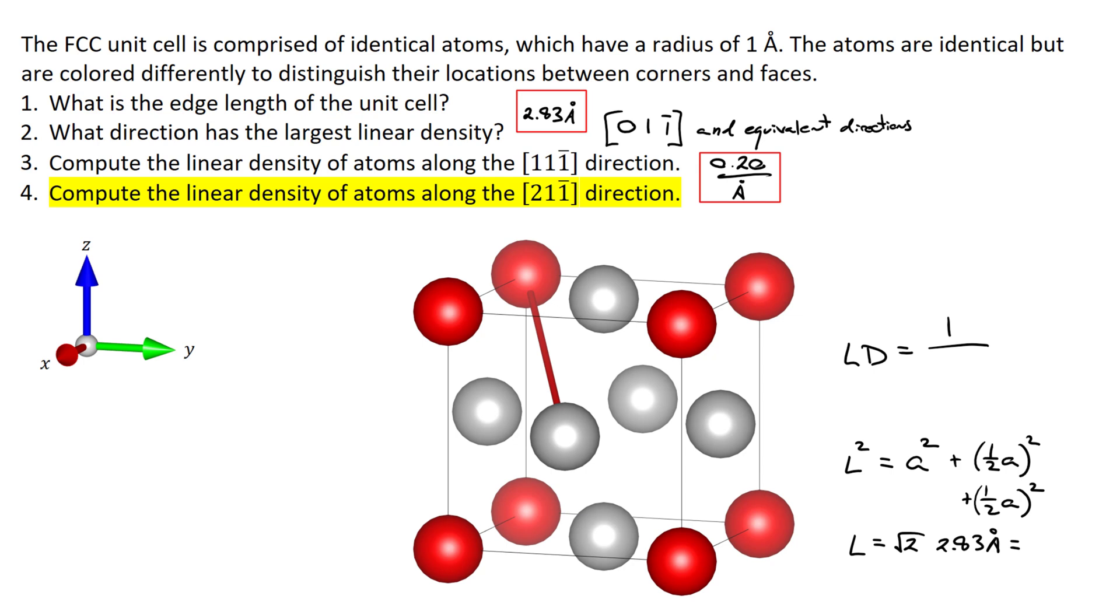And the length of this line is going to be equal to four angstroms. So the linear density along that direction is going to be one atom for every four angstroms, or a linear density of 0.25 atoms per angstrom.